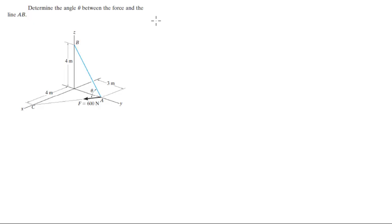First we're going to find all the points involved. A sits at 0i plus 3j plus 0k, B sits at 0i plus 0j plus 4k, and C sits at 4i plus 0j plus 0k.